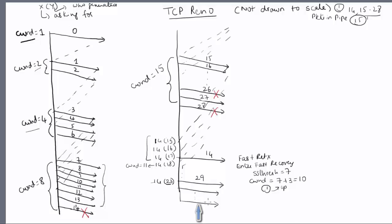As more duplicate ACKs come you keep sending new packets. You won't get ACKs for 26 and 28, so you will get ACKs for 24, 25, and 27, allowing you to send packets 29, 30, 31, and 32 in response. At this particular point your CWND value is equal to 19.